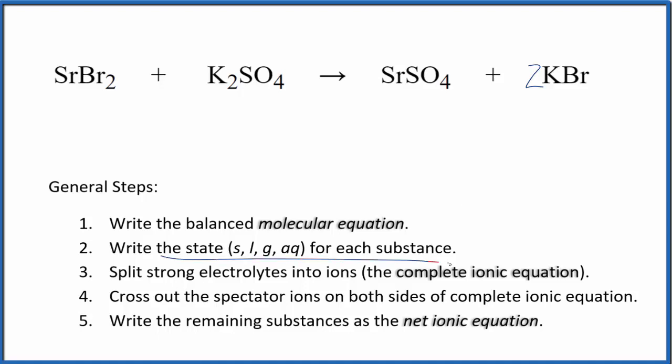Next, we need to write the state for each substance. If you know your solubility rules, bromides are pretty soluble, so we're going to put aqueous. That's going to dissolve and split apart into its ions. Potassium compounds are very soluble, and sulfates in general are very soluble.